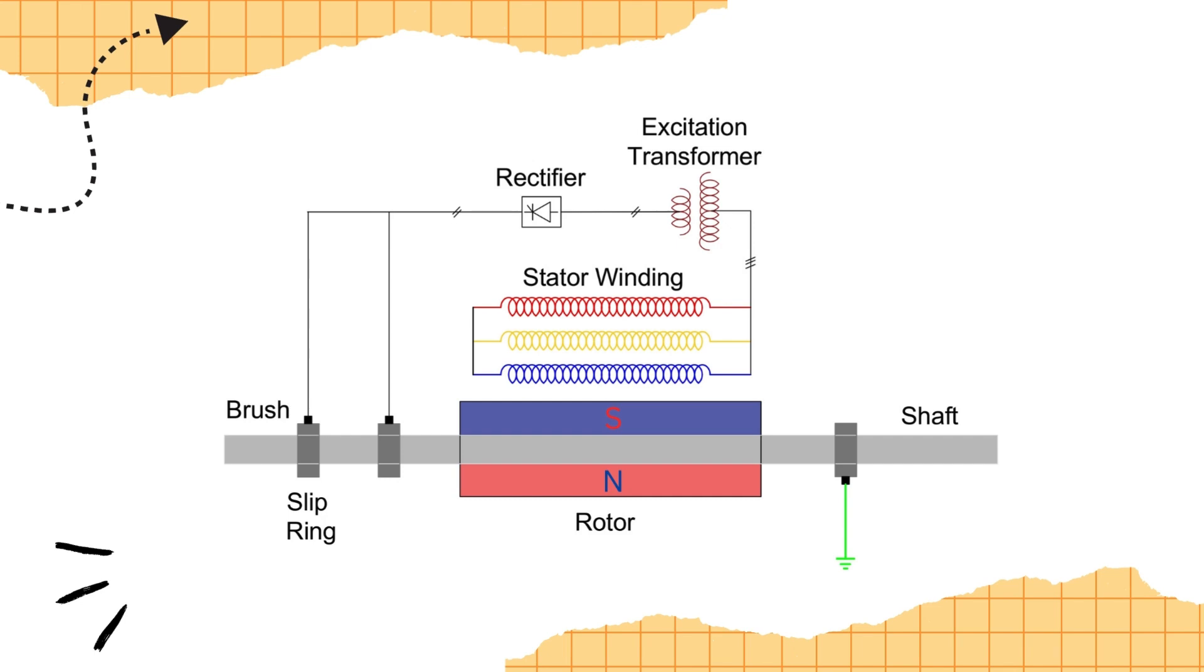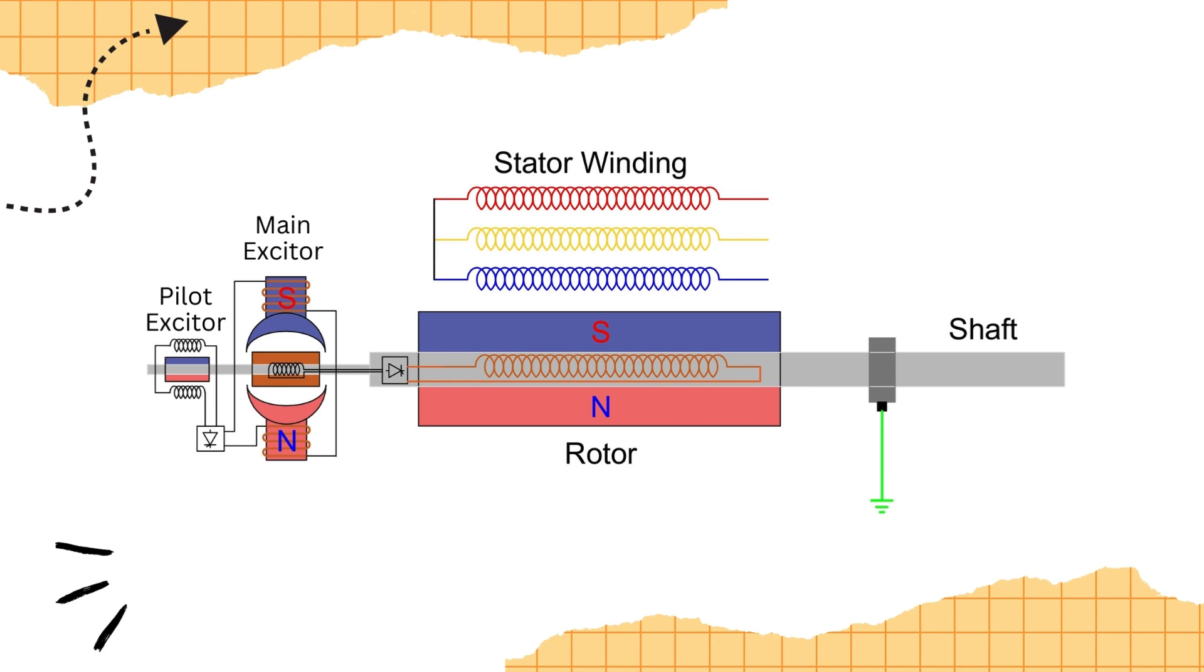On the other hand, the brushless excitation method involves a permanent magnet generator or pilot exciter, which is coupled with the main generator. This setup generates AC voltage that is converted to DC voltage and introduced to the field winding of the main exciter.